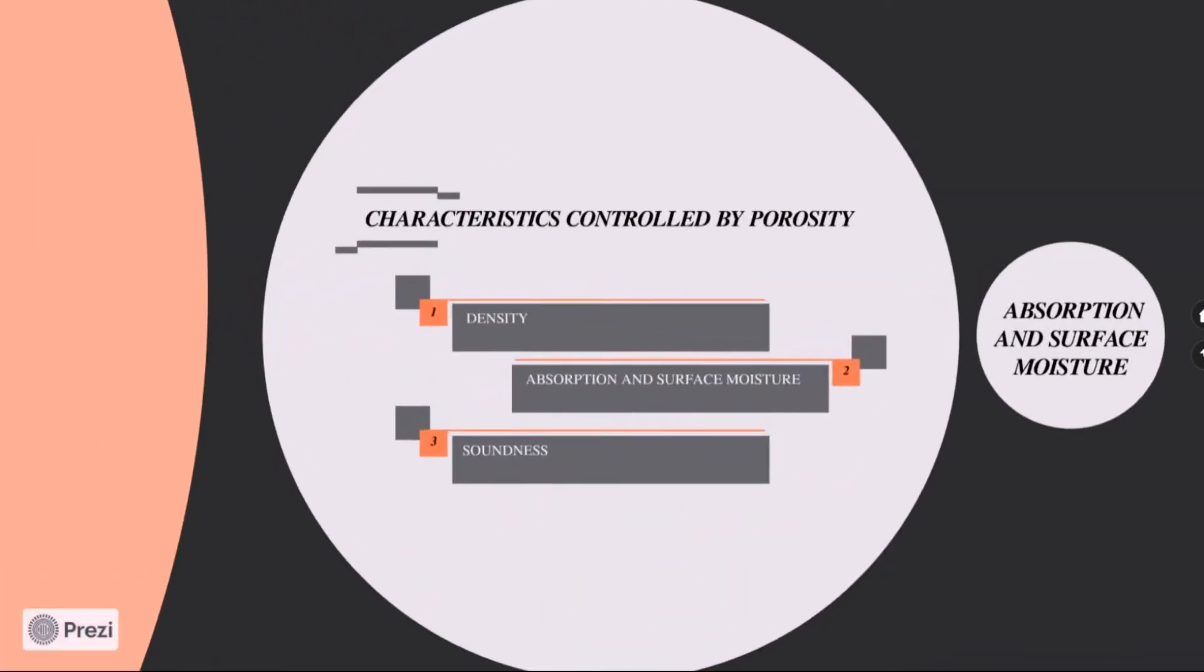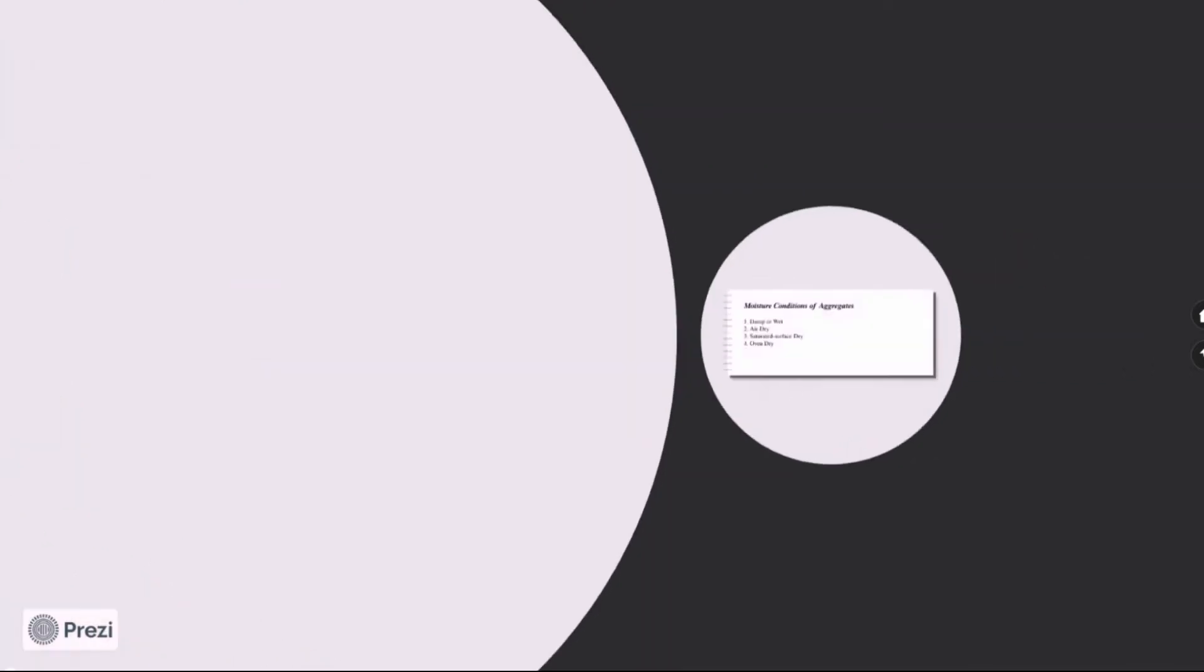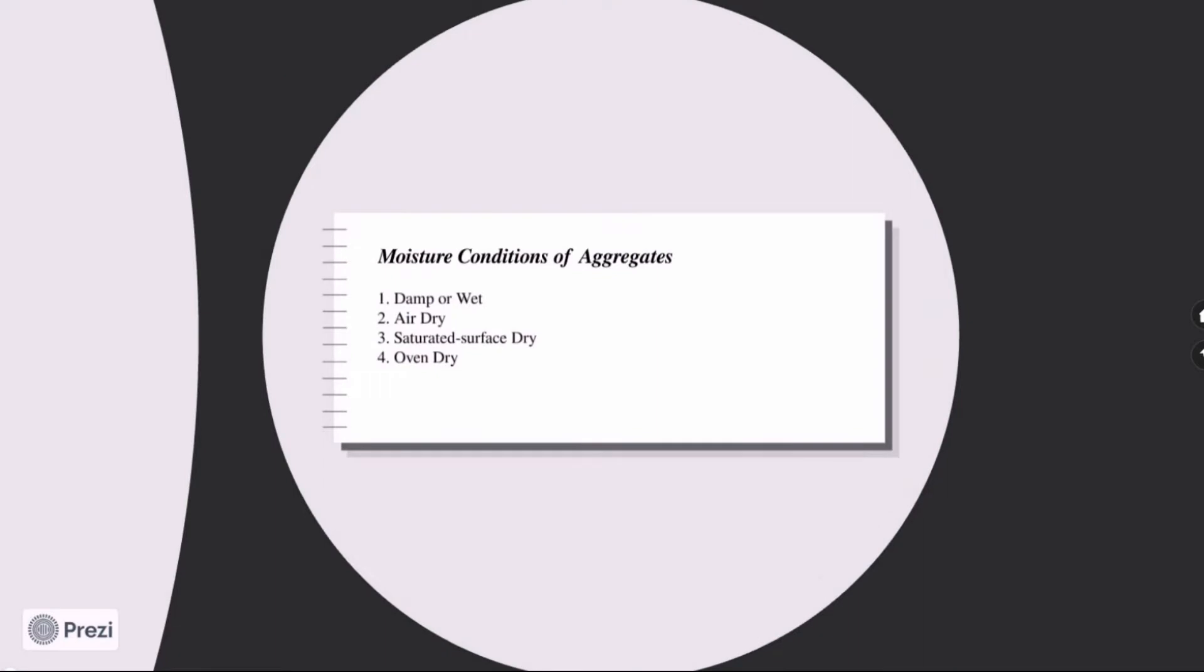There are three characteristics controlled by porosity: density, absorption and surface moisture, and soundness. Under absorption and surface moisture, there are different moisture conditions of aggregates. These are damp or wet, air dry, saturated surface dry or SSD, and oven dry.